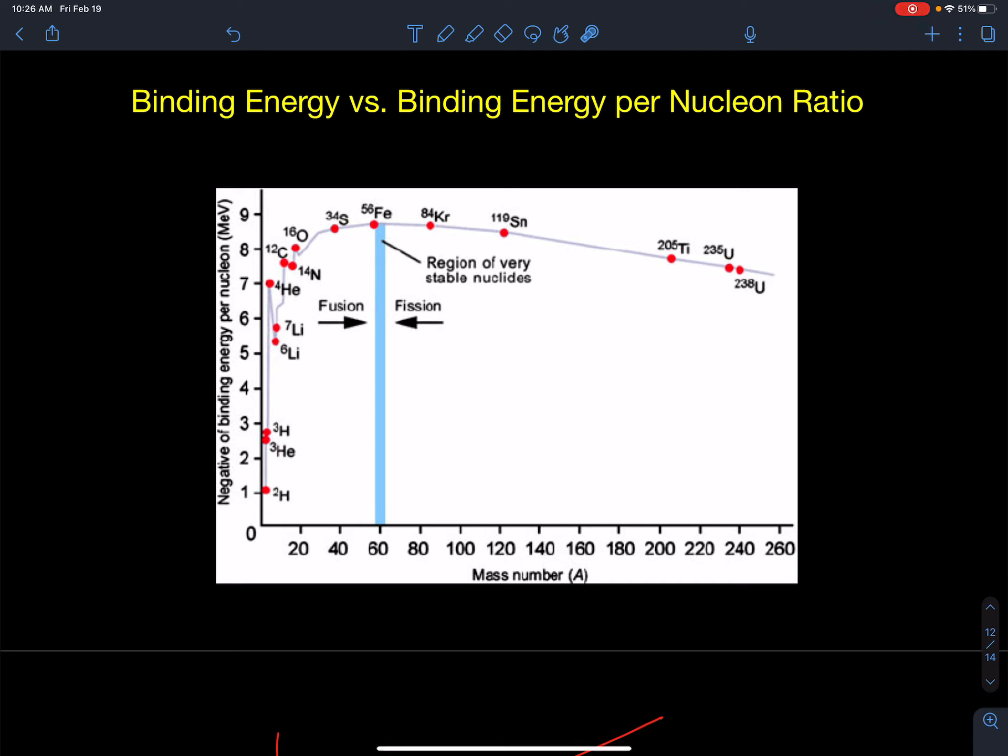And this curve is very useful for me to find the binding energy of any element. So how would I go and find the binding energy, the actual binding energy, not the binding energy per nucleon of iron. I want to find the binding energy of iron. So the binding energy of iron can be calculated by taking binding energy per nucleon times the total number of nucleons is equal to binding energy. So it's pretty easy.